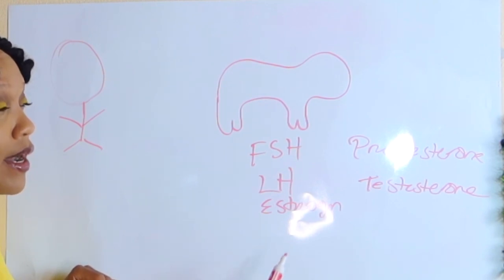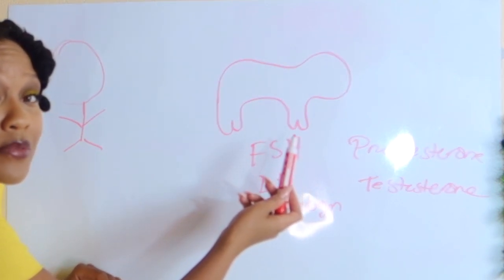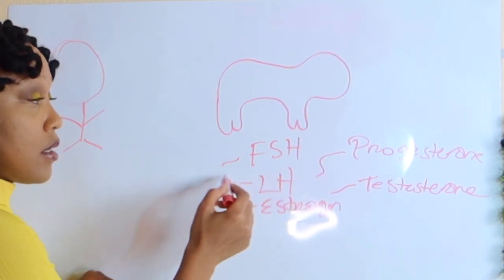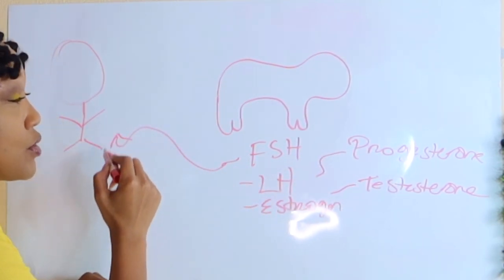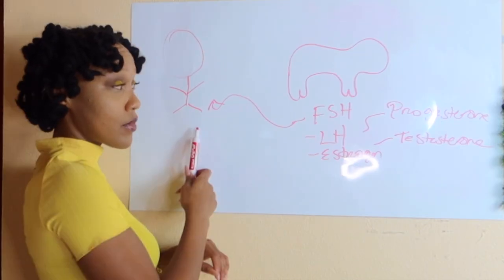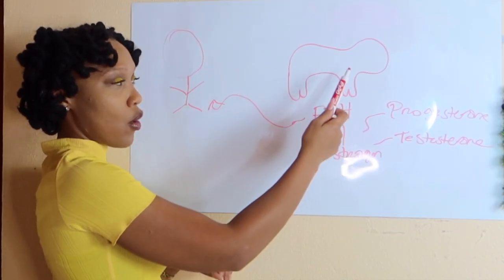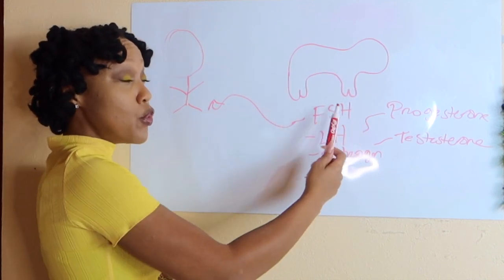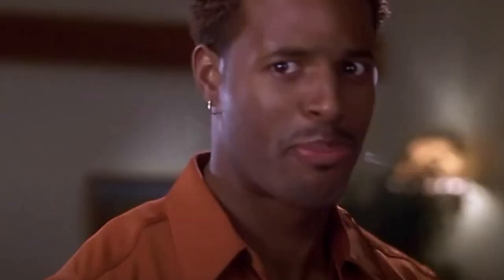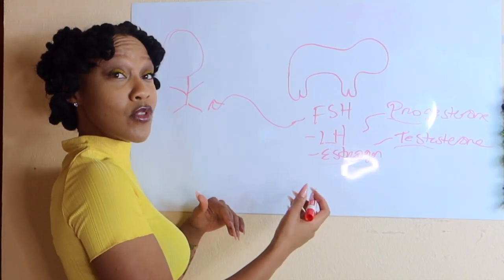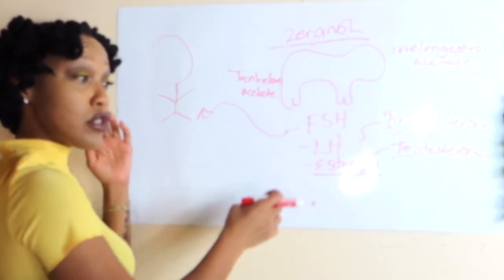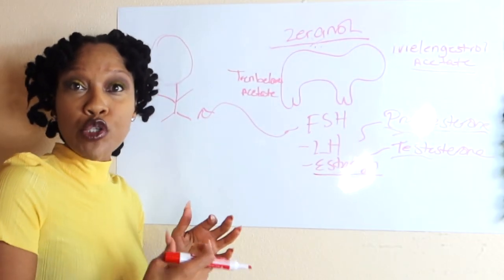These hormones are also naturally produced in humans. So if you're consuming the hormones from an animal that you also naturally produce, you now have an imbalance of these hormones. But wait, there's more. There are hormones also injected into these animals so that these animals can do things that they're not born to do.